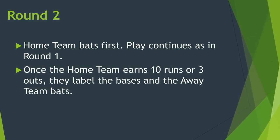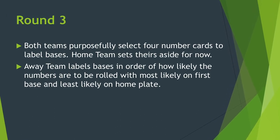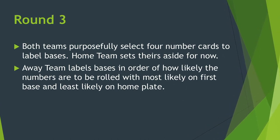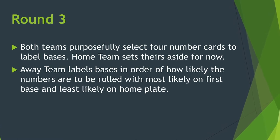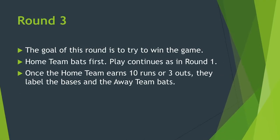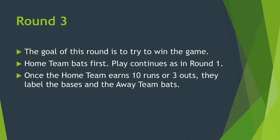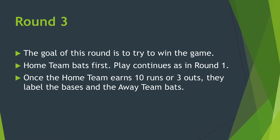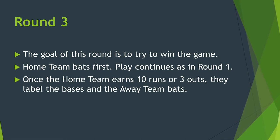Before round three, instead of randomly selecting number cards, both teams choose which numbers they want to place on the bases. The home team sets their numbers aside. The away team labels the bases first. The home team bats first, and play continues as in round one. The goal of this round is to try and win the game. After the home team bats, they arrange the numbers they chose at the beginning of round three on the bases. Round three ends when the away team earns ten runs or its third out.